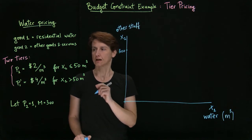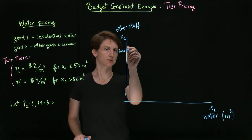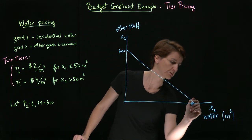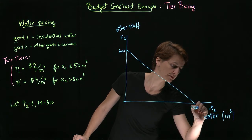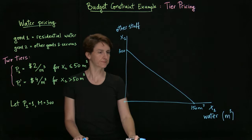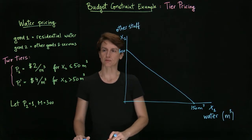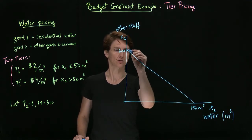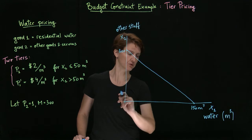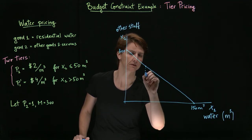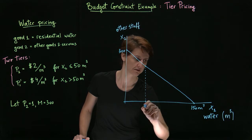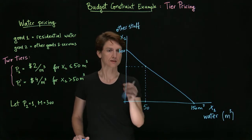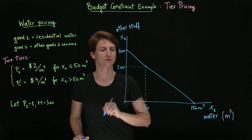If the price was two dollars throughout, then the budget constraint would look like this, where we would be able to buy at most 150 cubic meters. But of course, that's not what happens. Instead, the price remains at two dollars only until we use 50 cubic meters.